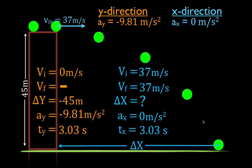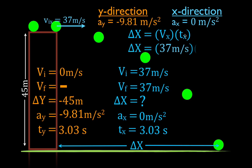The object is doing both motions at the same time. We know the object is moving at 37 meters per second in the x-direction for 3.03 seconds. So the change in x equals the velocity times the time: 37 times 3.03. That tells us the object travels 112 meters in the x-direction. So if we launch an object from a height of 45 meters with an initial horizontal velocity of 37 meters per second, the object will travel a distance of 112 meters in the x-direction and land 112 meters away.